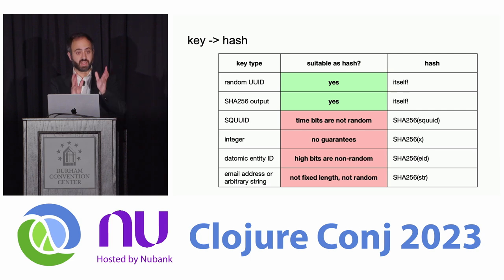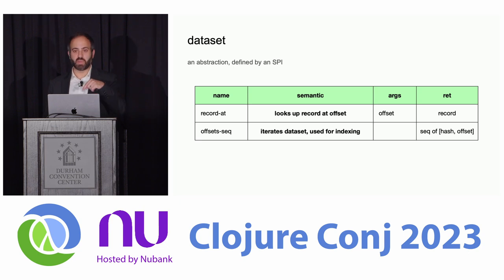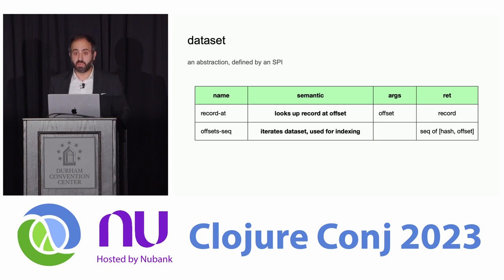Our solution has two parts: the index at the end of the book, and then the data set — the actual book contents. The data set portion is an abstraction defined by an interface with two primary methods. It's an SPI, service provider interface — like an API where the program calls you and you customize the behavior. We're going to customize the behavior of this index by connecting it to different data sets that implement this data set abstraction. The primary method you need to implement is look up a record at the given offset — given a page number, give me the content.